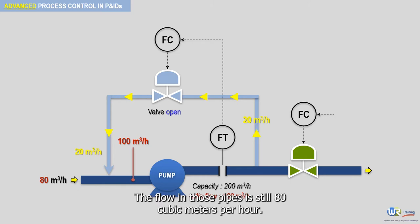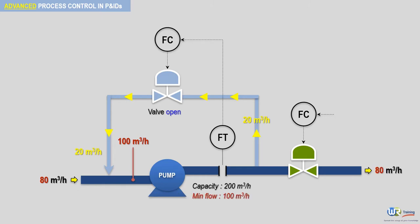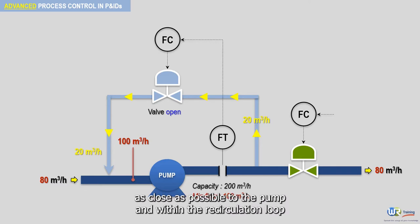The flow in those pipes is still 80 cubic meters per hour. The point here is that the sensor should be placed as close as possible to the pump and within the recirculation loop.